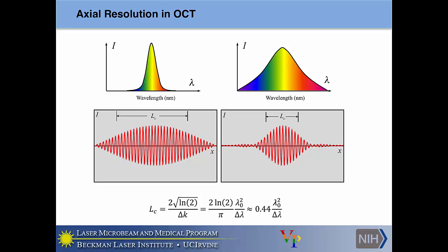Most tissue imaging is done at 1.3 micrometers, because there's a nice minimum in the water absorption at 1.3 and very little hemoglobin absorption — allowing penetration of about 1.5 millimeters into normal tissue. For eye imaging, since water absorption is much higher at 1.3 than at 800 nanometers, you typically do it at 800. Some people are trying to go out to 1.7 micrometers to look further, but as the center wavelength increases — since it's squared in the coherence length equation — achieving the same axial resolution requires a much, much broader source, which is very difficult.